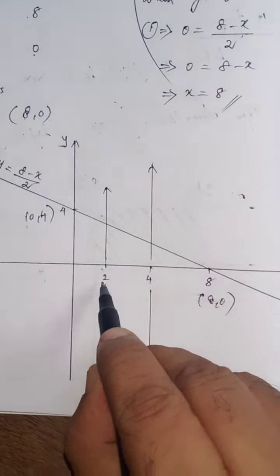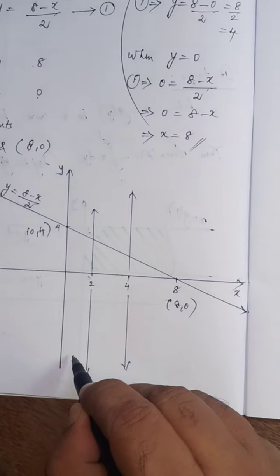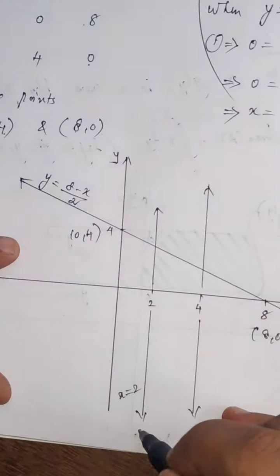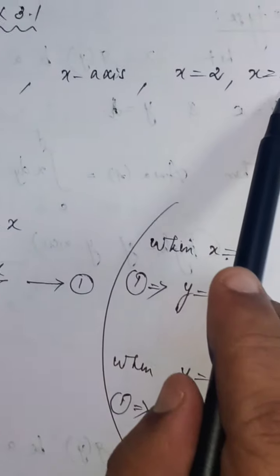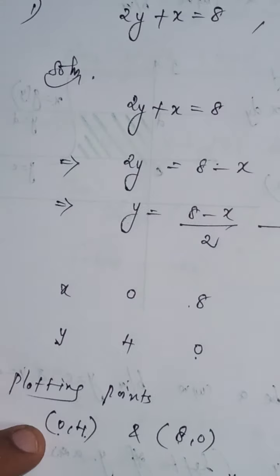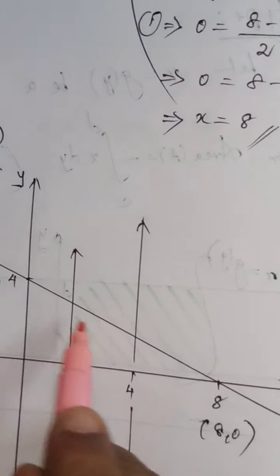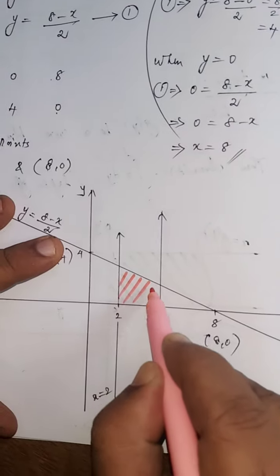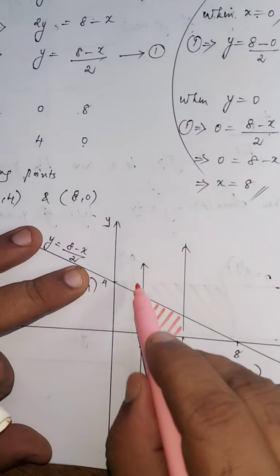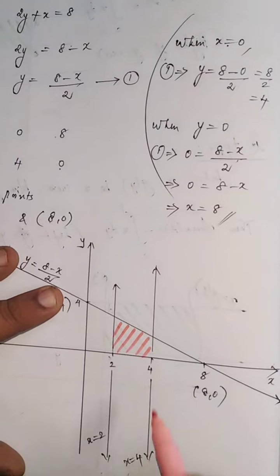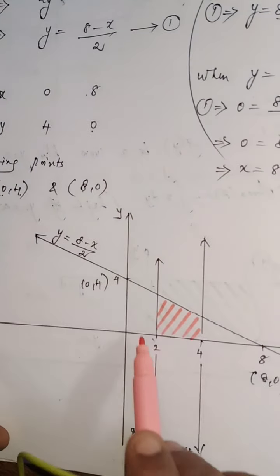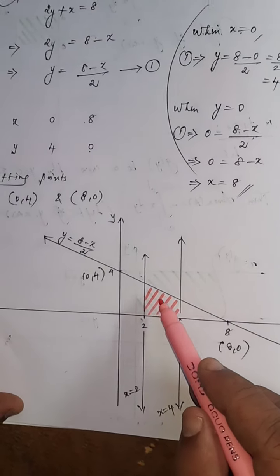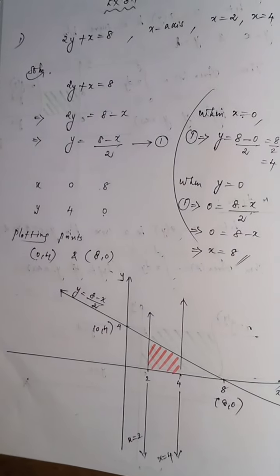The line x equals 2 passes through the x-axis at 2, and x equals 4 passes through at 4. These are the two vertical lines given. The closed region is bounded on one side by x equals 2, the other side by x equals 4, the bottom by the x-axis, and the top by the straight line y equals (8 minus x) divided by 2. This region lies completely above the x-axis.